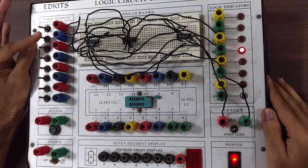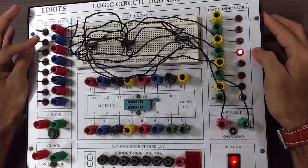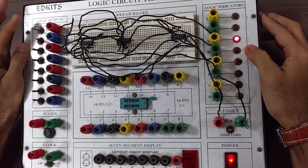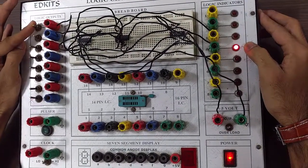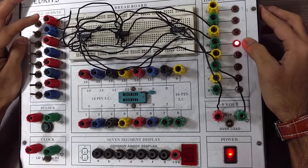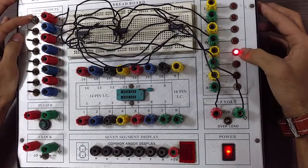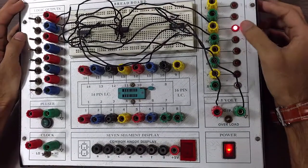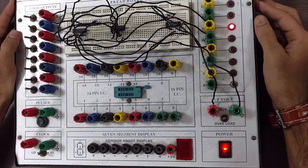As we can see that when A is equal to B is equal to zero, A equal to B is glowing. And when A is equal to B is equal to one, also A equal to B is glowing. For A greater than B, this is glowing, and for A less than B, this is glowing. Hence the truth table is verified.